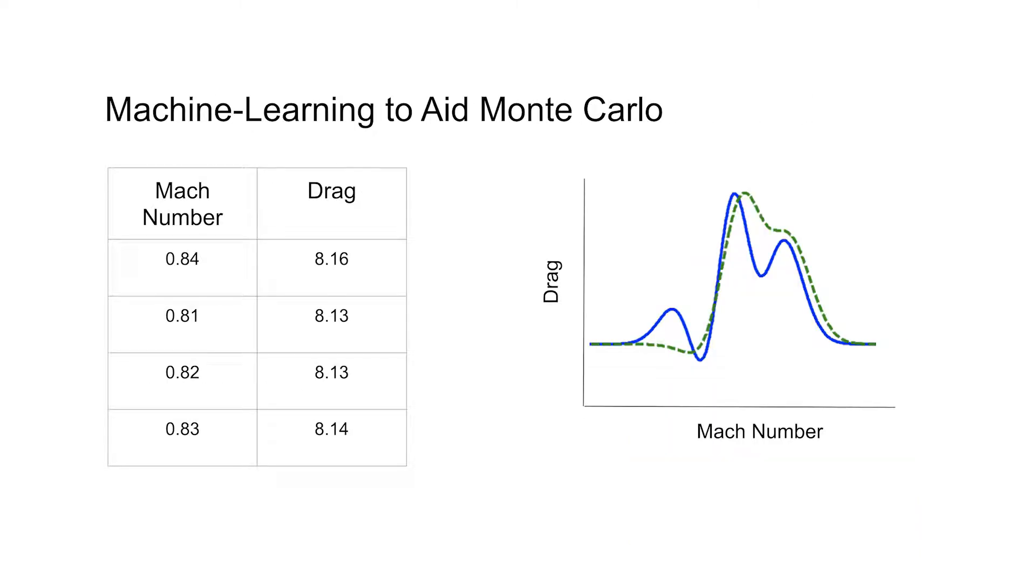So how this works is, on an aircraft, we have a lot of sensors that measure what the conditions were when the flight was taking place. So we don't just know the value of the drag. For example, maybe we also know the Mach number at which the airplane was flying at. That is, how fast the airplane was flying relative to the speed of sound. And so what we have is this input-output relationship, where the input is how fast we are flying, and the output is the drag of the airplane.